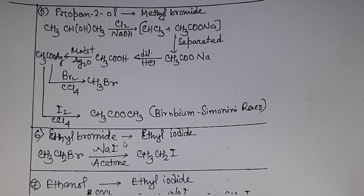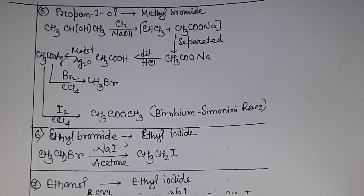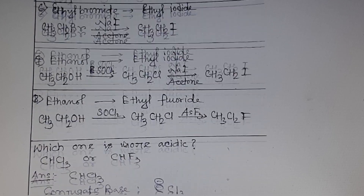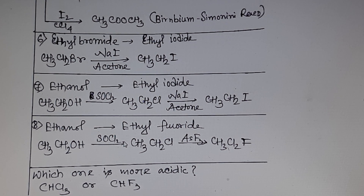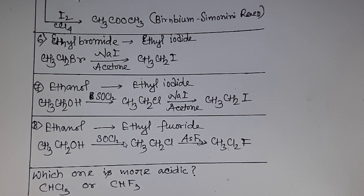Problem 6: ethyl chloride to ethyl iodide. The name of this reaction is the Finkelstein reaction. This reaction follows an SN2 pathway.